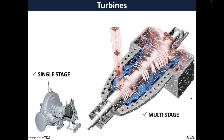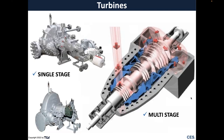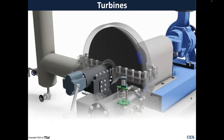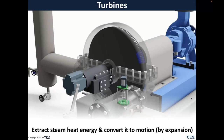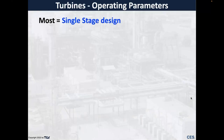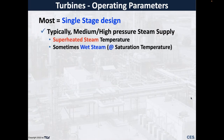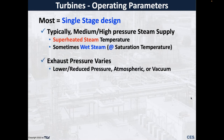Let's talk about single-stage turbines and multi-stage turbines. Even single-stage turbines can be rather sophisticated. We want to extract heat energy and convert it to motion by expansion. This is important to distillation because turbines are used in so many distillation operations, and your distillation assets will not perform if their turbines are not running properly. Most turbines we deal with are single-stage design, typically medium or high pressure steam supply including superheated steam, but sometimes we have wet steam. Exhaust pressure can vary from reduced pressure to atmosphere or vacuum.